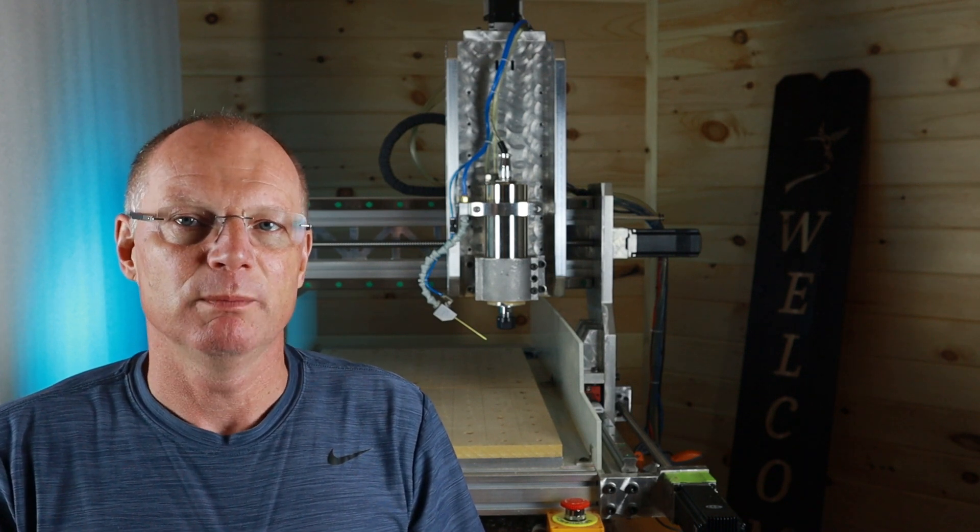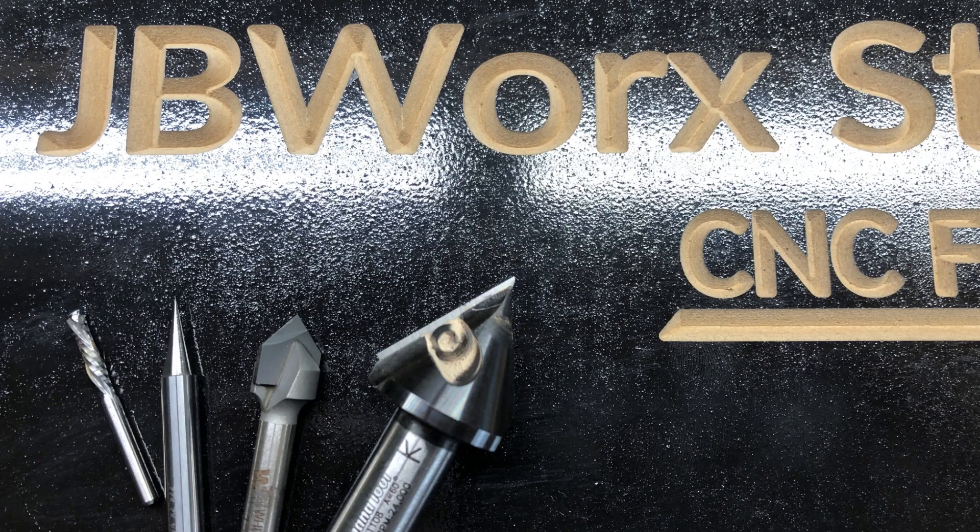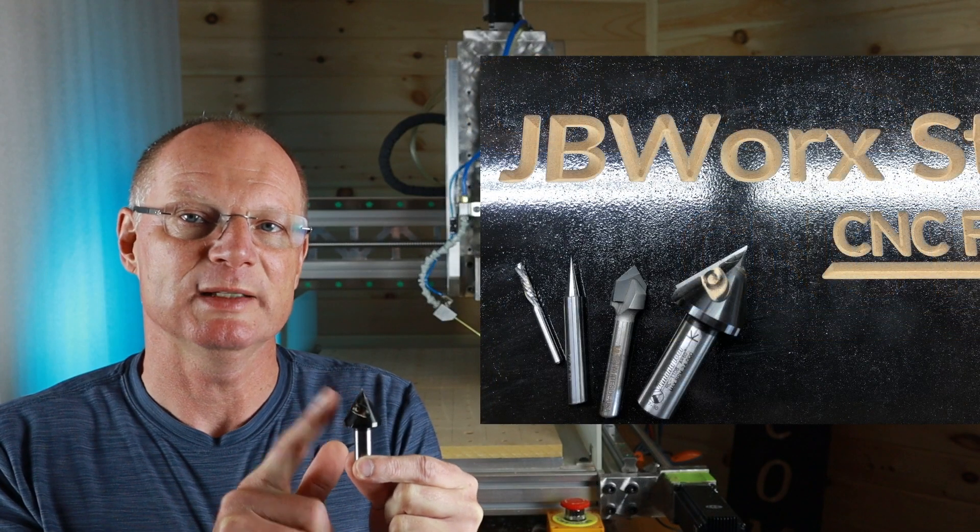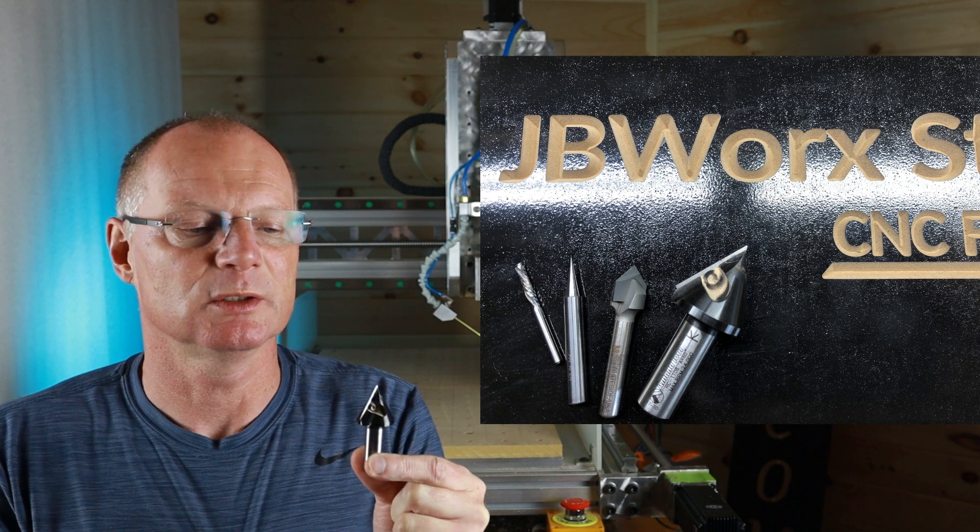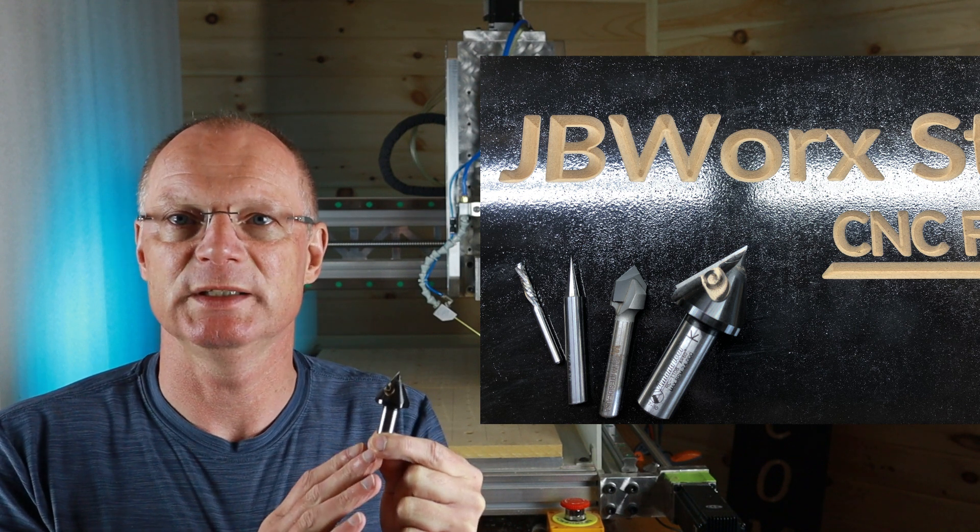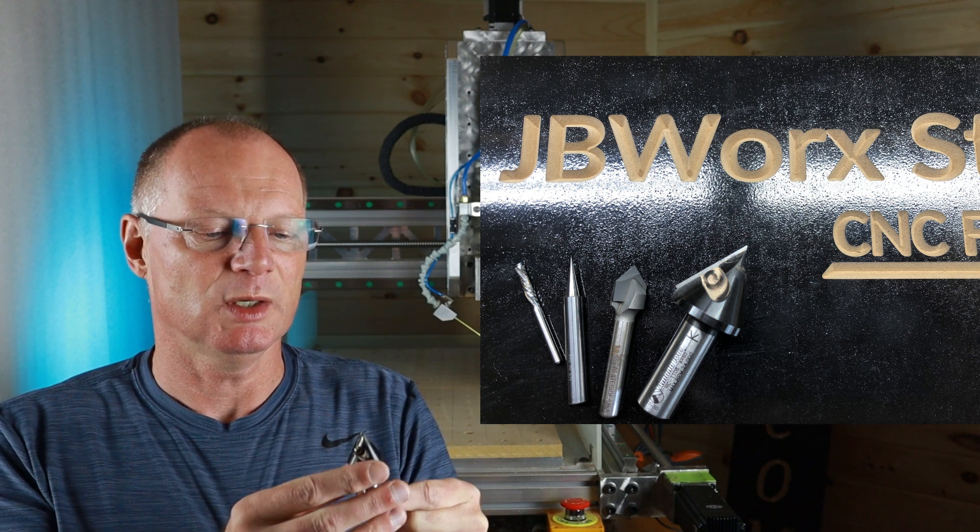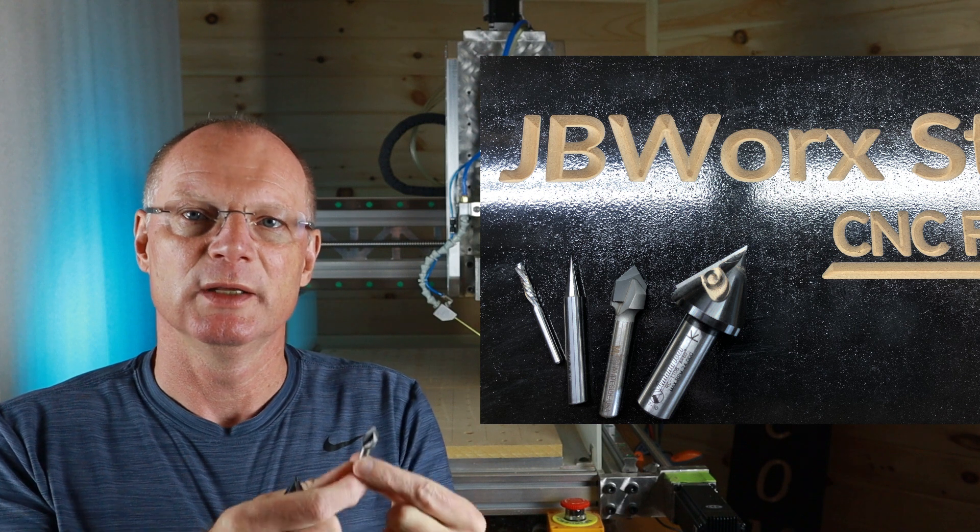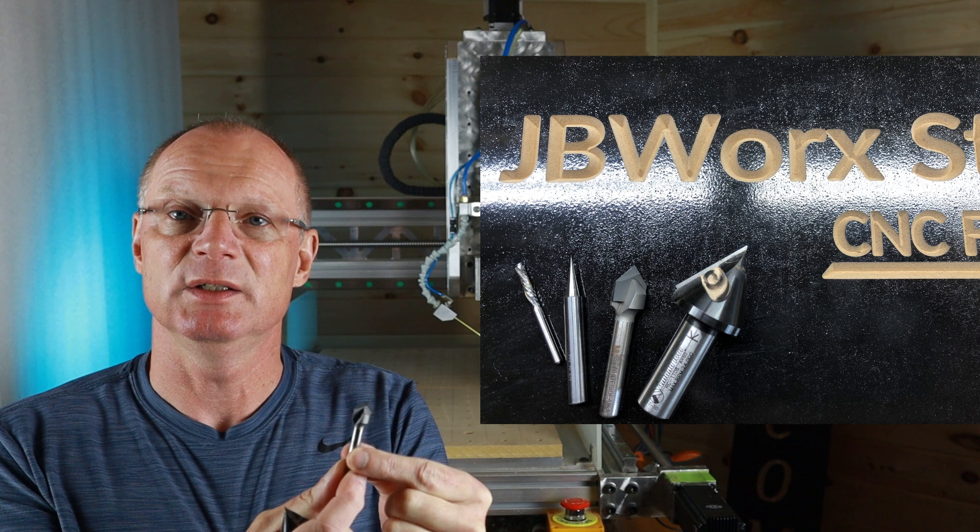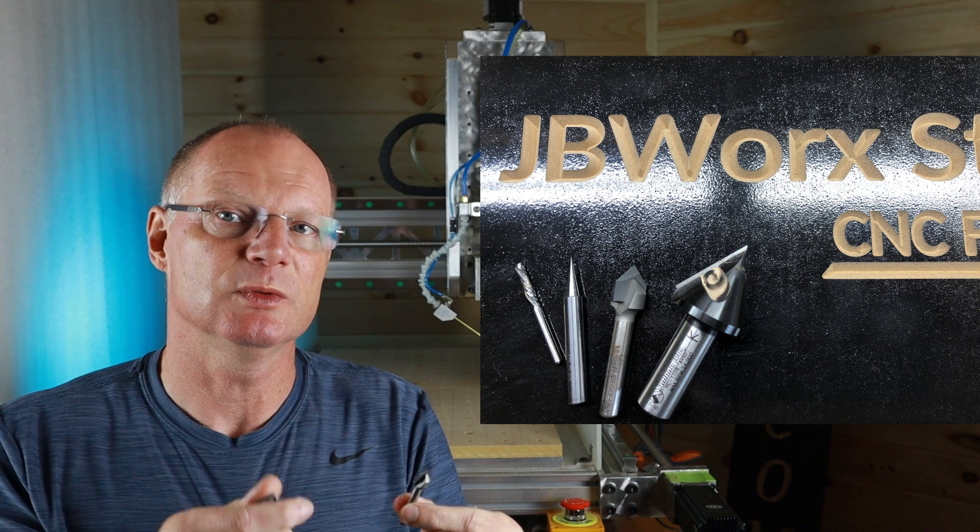My go-to bit is a 60-degree v-bit that I have right here. It has a three-quarter inch diameter and a half-inch shank, and it has a replaceable carbide insert blade. I love this. If you can only buy one, I would recommend you get this one. There are different degrees—this is 60, but this Whiteside one is 90 degrees, which makes a wider letter and won't go as deep into the material.